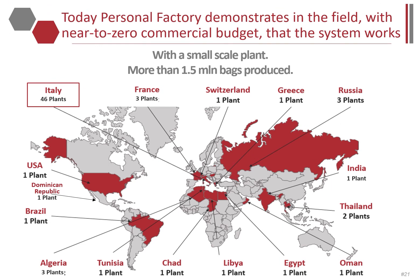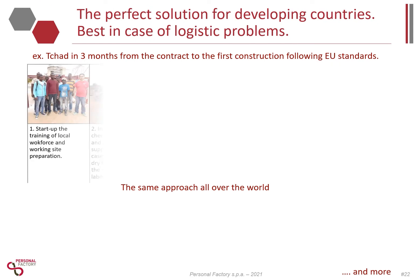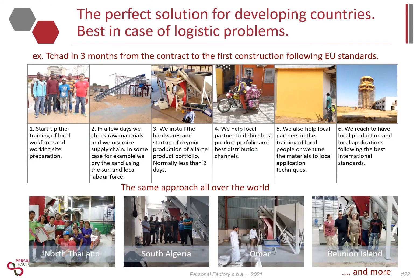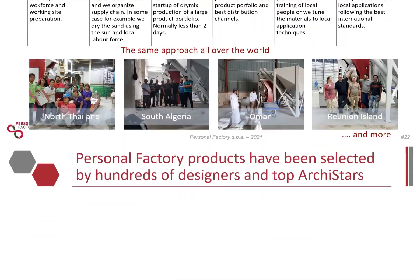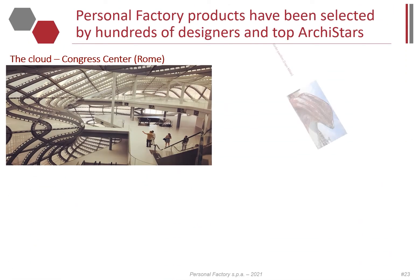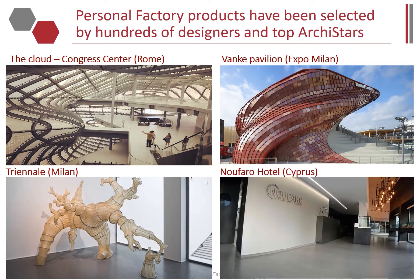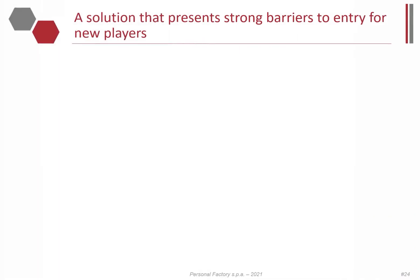Today we have demonstrated in the field and at small scale that the business model is viable and the technology is ready to scale up — with more than 70 plants installed in 15 countries, more than 1.5 million bags sold worldwide, and the business model and technology validated in extreme and difficult conditions, from emerging countries to the Sahara Desert, Siberia, Oman, Caribbean islands, Chad, and Thailand. Consistency in quality is proved by Personal Factory products being selected by hundreds of designers and top architects.